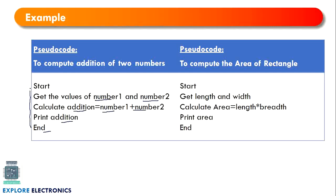Here is one more example — to compute the area of a rectangle. As usual we start the execution, then get the length and width from the user. Next, calculate by multiplying the length and breadth. After calculation, print the result, and then execution ends. In real world scenarios there will be many steps involved in a program, so we write them all down to understand the flow before writing the actual code.